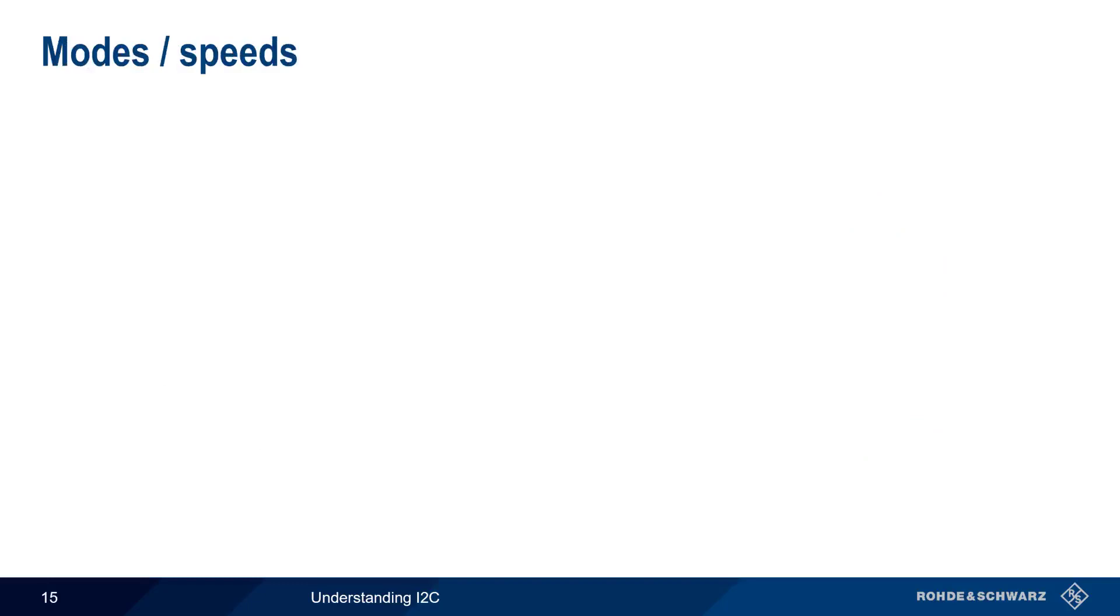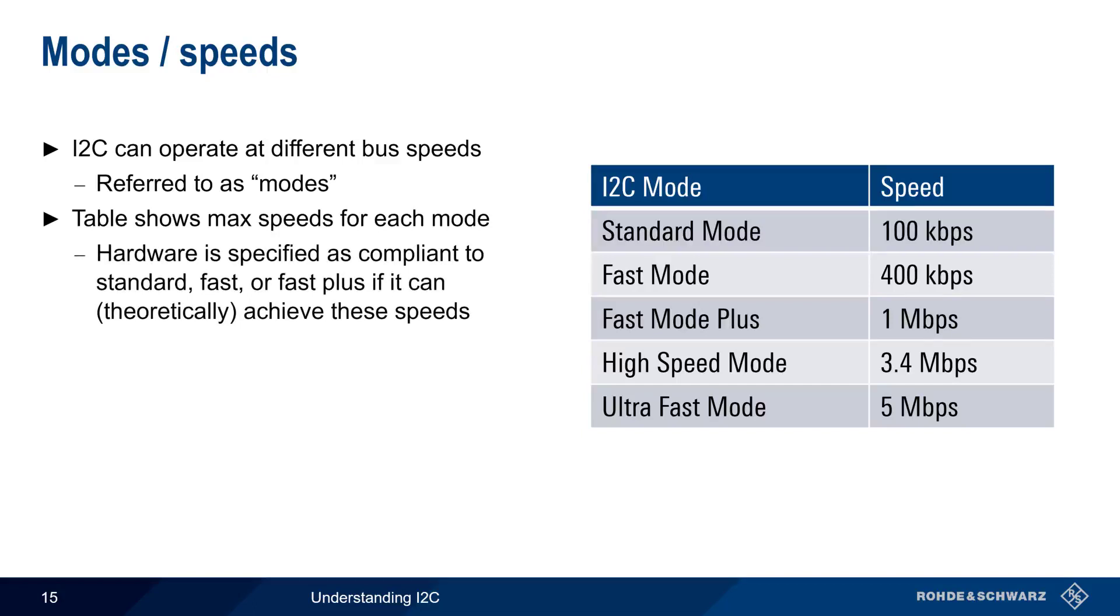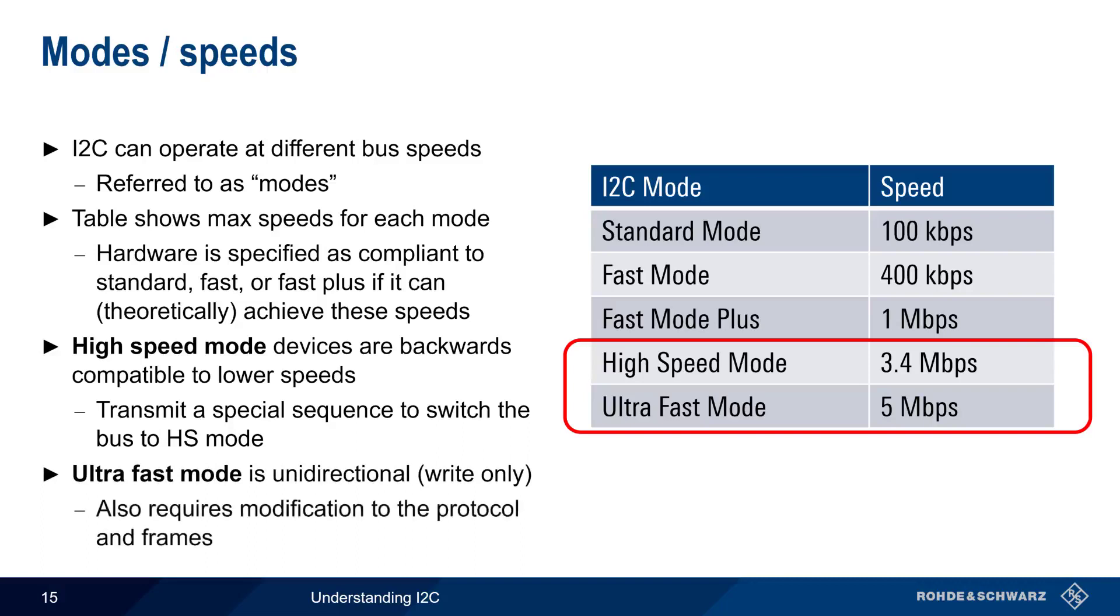The values of the pull-up resistors are one of the factors that limit the maximum bus speed. I2C can operate at various bus speeds, often referred to as modes, and this table shows the maximum speeds that are achievable for each mode. Hardware is categorized as supporting one or more of these modes, meaning that the device can, theoretically, achieve the corresponding speed. But in many cases, bus speed is limited by other factors, such as the ones mentioned in the previous slide. The last two modes achieve higher speeds by modifying standard I2C behavior. High-speed mode devices are backwards compatible to the lower-speed modes, but can temporarily switch the bus to a high-speed mode by transmitting a special sequence. Ultra-fast mode is unidirectional, that is, it's write-only, and also makes modifications to the standard I2C protocol and frames.